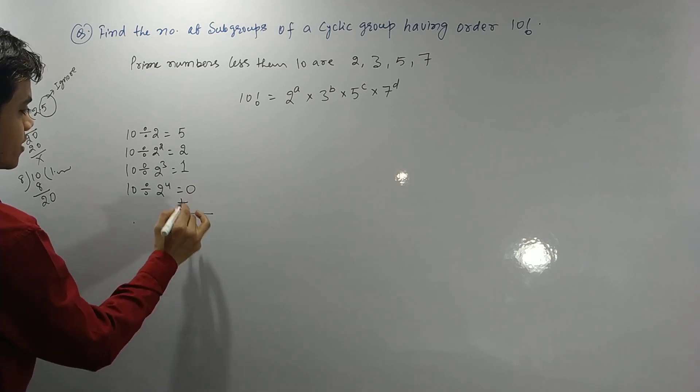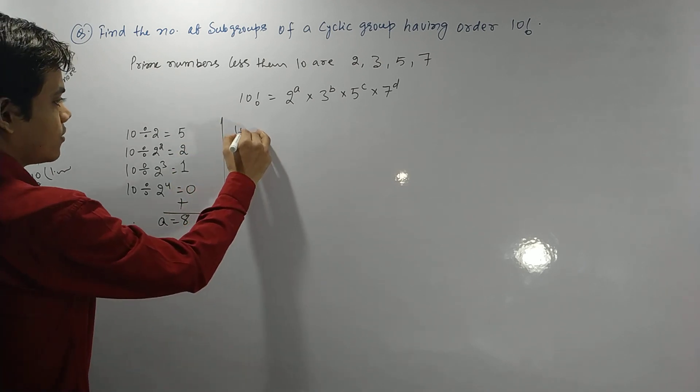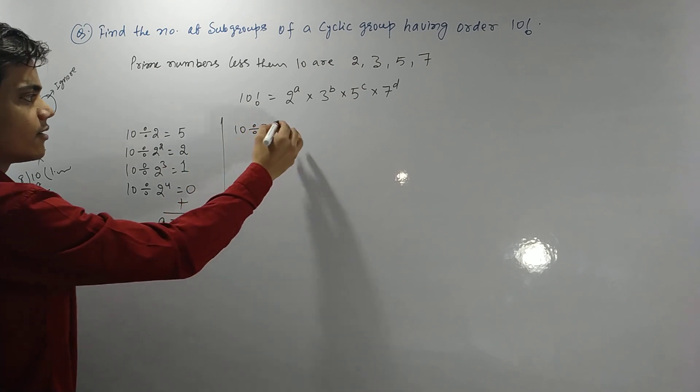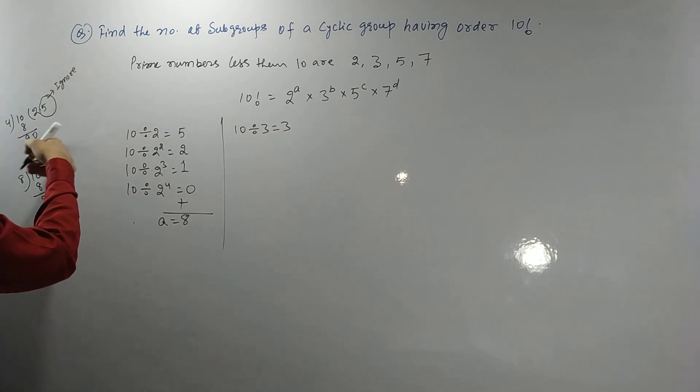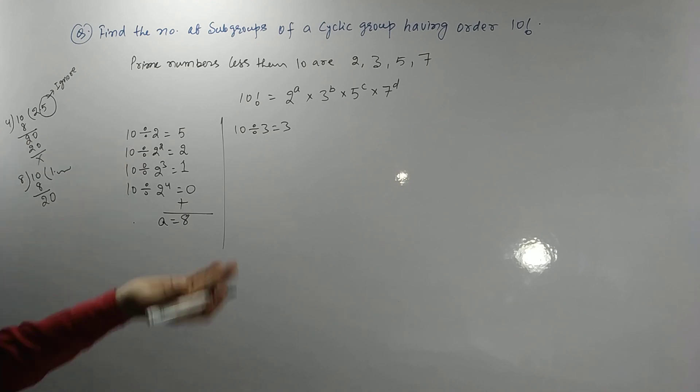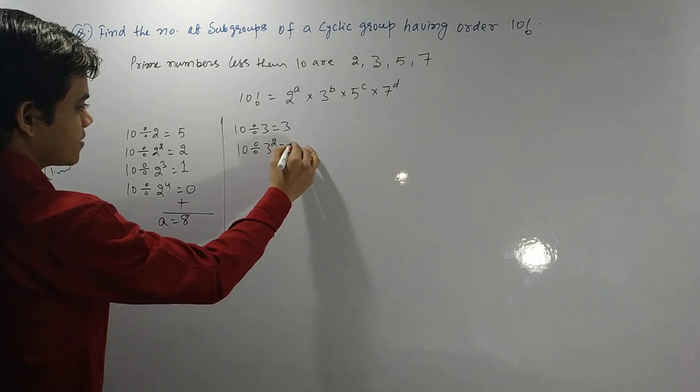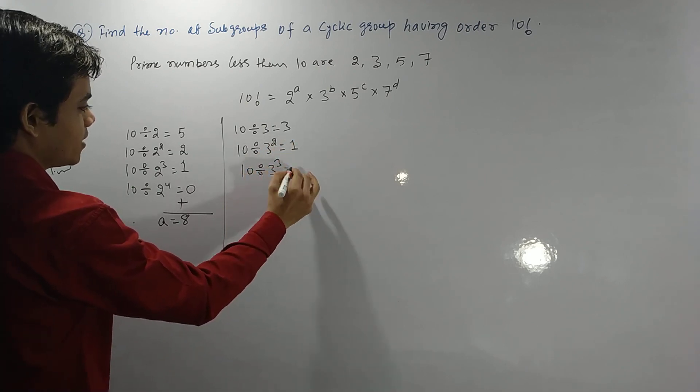Now divide 10 by 3, which gives 3. Then you have to ignore the things after decimal. 10 divided by 3 squared, which is 9, gives 1. And 10 divided by 3 cubed gives 0. So here, what is your b? Certainly b = 4.